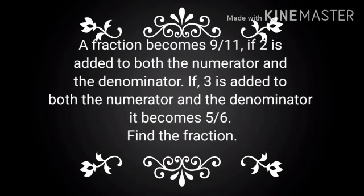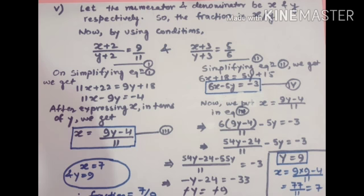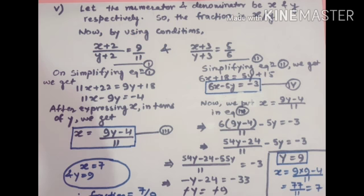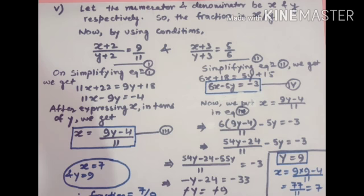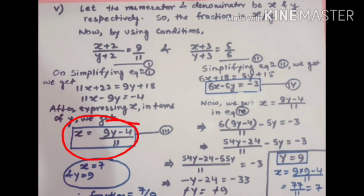Next word problem: a fraction becomes 9/11 if 2 is added to both numerator and denominator; if 3 is added to both it becomes 5/6. Find the fraction. Let numerator and denominator be x and y, so the fraction is x/y. This gives equation 1: (x+2)/(y+2) equal to 9/11, and equation 2: (x+3)/(y+3) equal to 5/6. Simplifying equation 1 gives 11x minus 9y equal to minus 4, and expressing x in terms of y: x equal to (9y minus 4)/11.